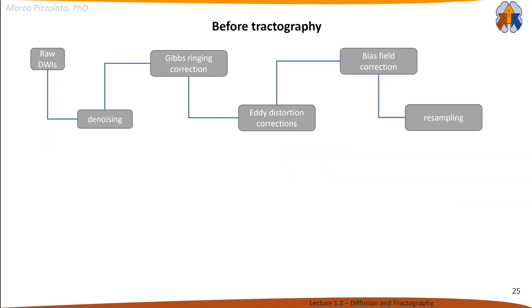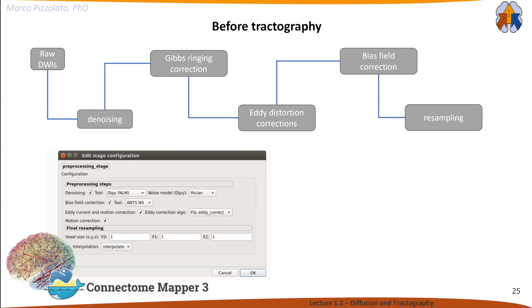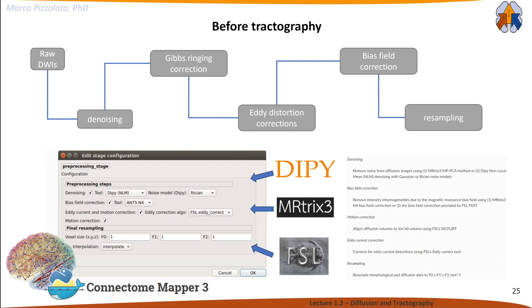Before doing tractography, there's a full pipeline of things to be done. We have raw diffusion weighted images, then denoise them, remove Gibbs ringing artifacts, correct for current distortions, bias field correction, resampling, etc. Only after that can we calculate fiber orientation distribution functions. Luckily, Connectome Mapper does this quite smoothly—you don't need to think too much about it.